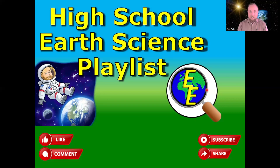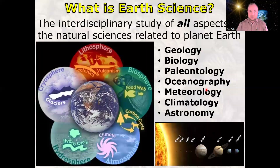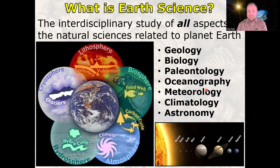But what exactly is Earth Science? Quite simply, it's the science of the Earth — all aspects of the Earth. It's often the first science taught at the high school level because it touches on all the other sciences.